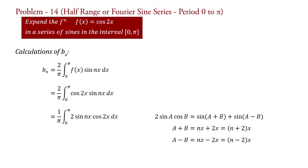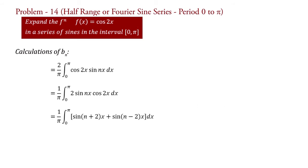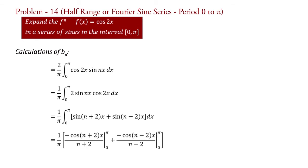Putting these values, we have b_n = (1/π) integral from 0 to pi of [sin((n+2)x) + sin((n−2)x)] dx. Integrating, we get b_n = (1/π) into [−cos((n+2)x)/(n+2)] from 0 to pi plus [−cos((n−2)x)/(n−2)] from 0 to pi.